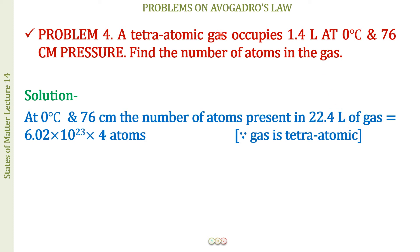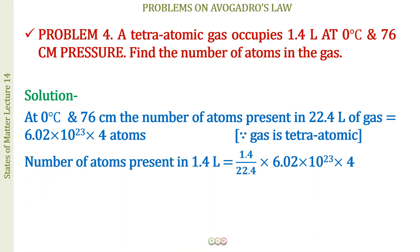But we want the number of atoms in 1.4 liters. So the number of atoms in 1.4 liters = (1.4 / 22.4) × 6.02 × 10²³ × 4 = 1.505 × 10²³ atoms. This uses your understanding of the mole concept and the fact that 1 mole at STP occupies 22.4 liters.